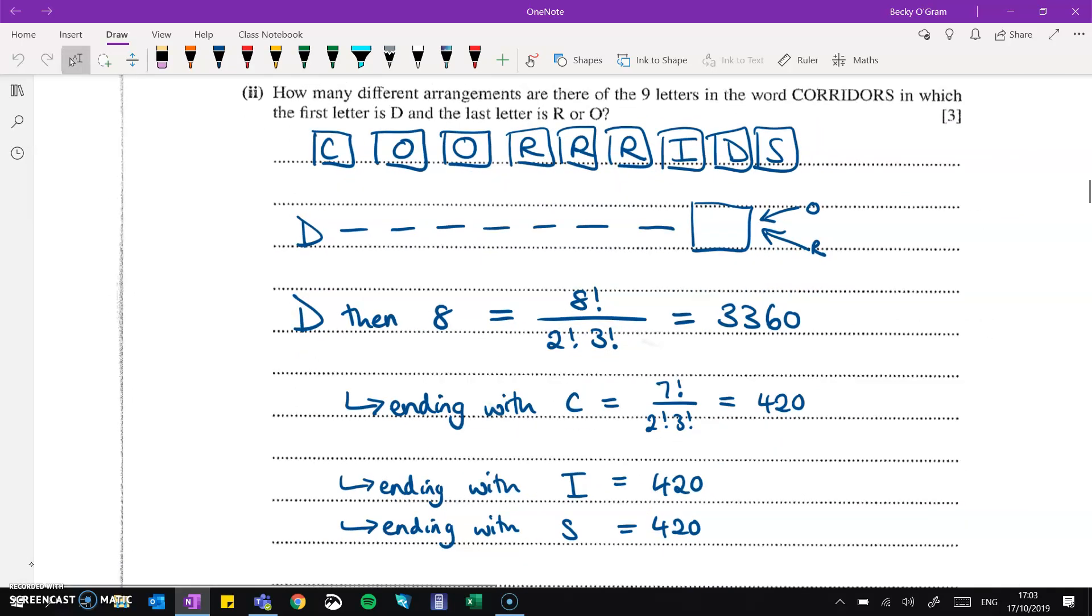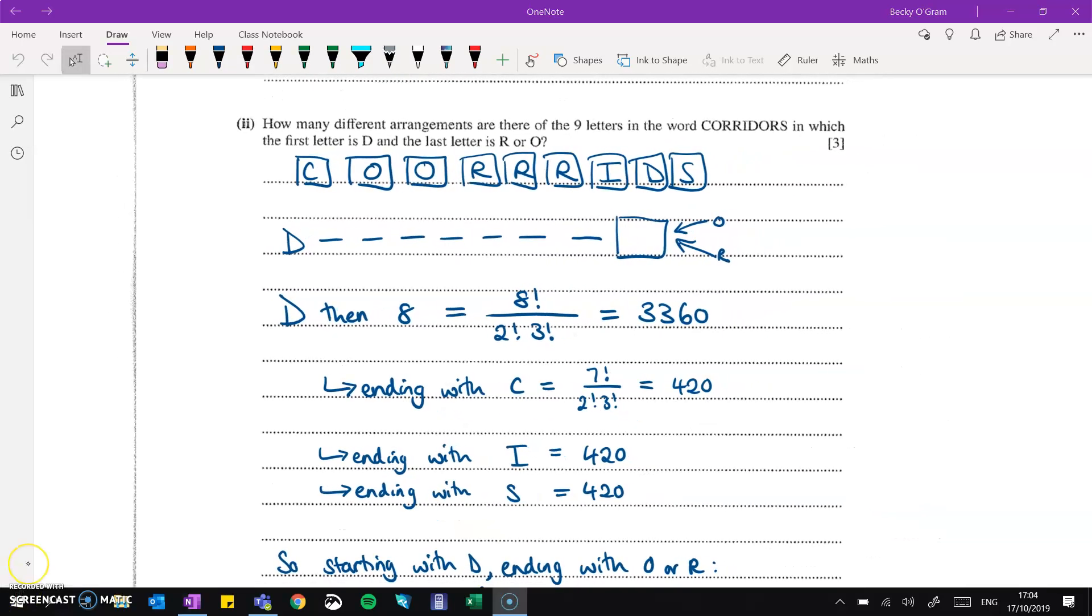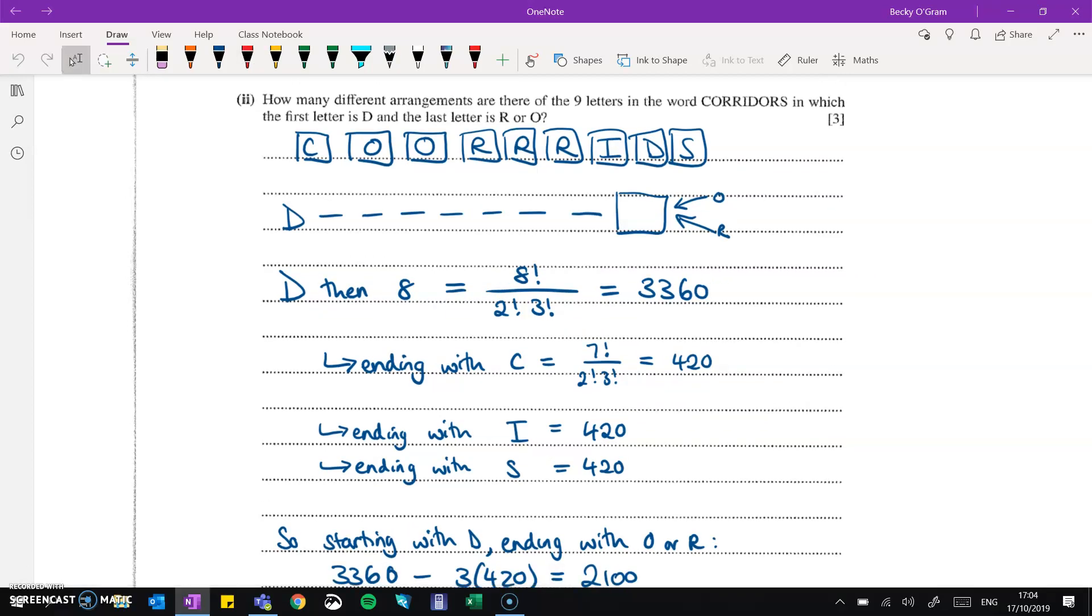Then part two is to say that we are going to stick a D at the end. So that's our fixed point to start off the first end. And then at the end of that, we've got a space where we are either going to put an O or an R. This one actually took me a little while to think about how we actually solve it. And I'm not 100 percent sure of the solution. So if anybody has reason to believe I've made a mistake, please just put a comment below. So what I've done is we do D and then we have eight spaces to fill. Now, if we had no restrictions on those eight spaces, we would have 3,360 ways to do that. So that's eight factorial divided by the repeats.